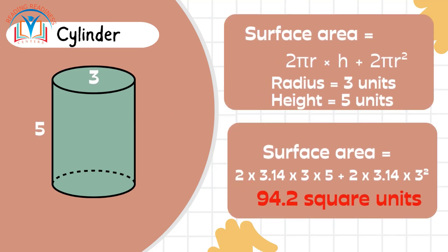Let's revisit our cylinder with a radius of 3 units and a height of 5 units. Plug these into our surface area formula, and we get 2 times pi times 3 squared plus 2 times pi times 3 times 5, which equals 94.2 square units.